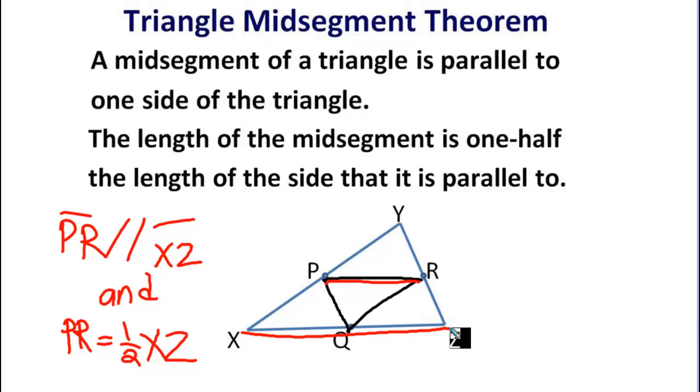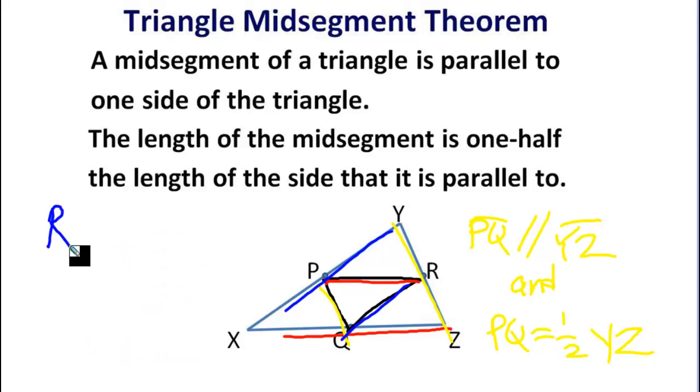Furthermore, you can generalize that out to the mid-segment PQ and the side YZ. So you can say PQ is parallel to YZ and PQ, the mid-segment's length, is one-half the length of YZ. One last set of truths you can make on this theorem. RQ is parallel to YZ and mid-segment RQ is one-half the length of side YZ.